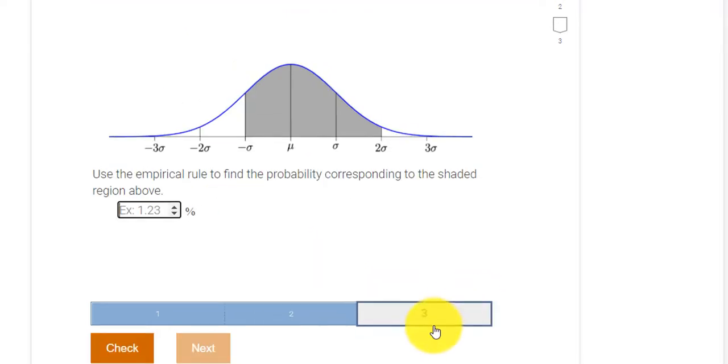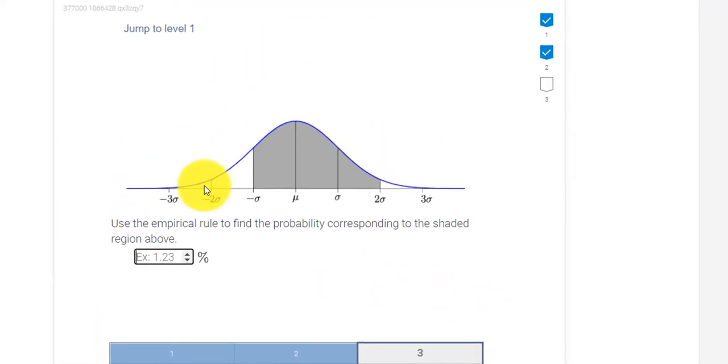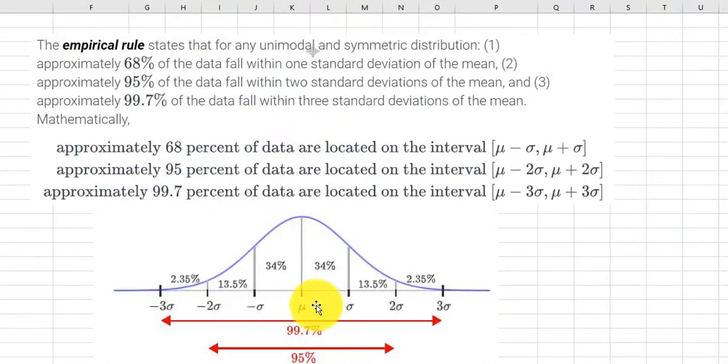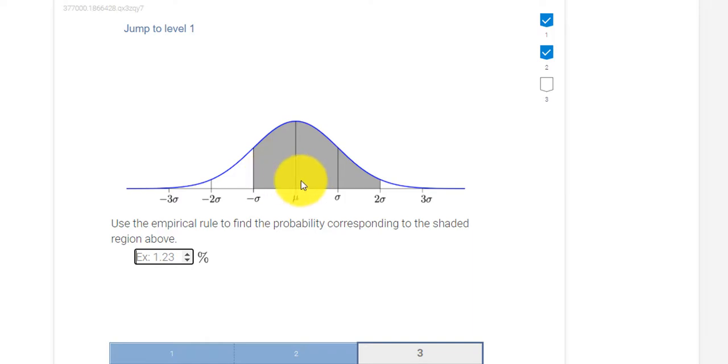Part three. Use the empirical rule to figure out the probability. So remember, the probability is really just the area under the curve. So I believe this was 34% on each side here. Let's take a look. Right, 34%. So that covers this middle piece, these middle two pieces.